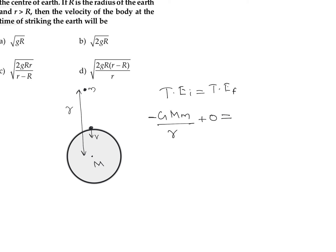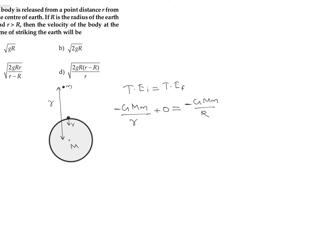This is equal to the total final energy when the object reaches the ground. The final potential energy is minus GMm divided by capital R, where R is the radius of the Earth, plus the final kinetic energy which is one-half times m times v squared. From this, we can find the value of v.